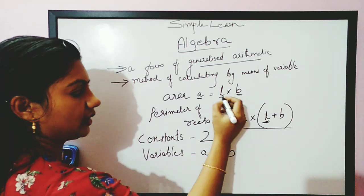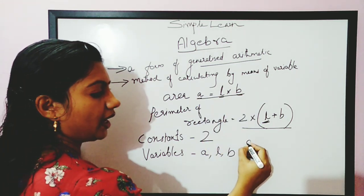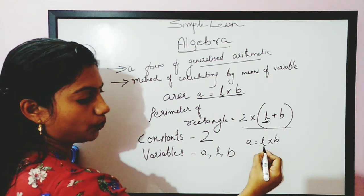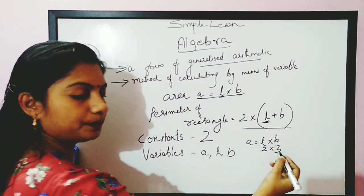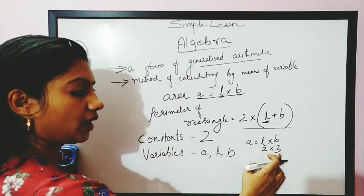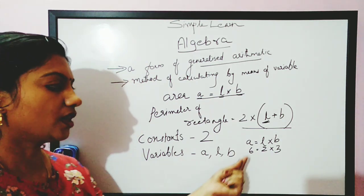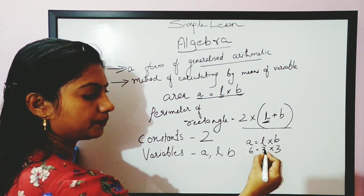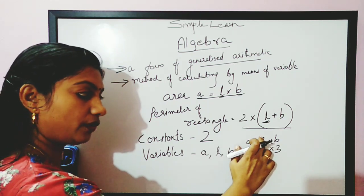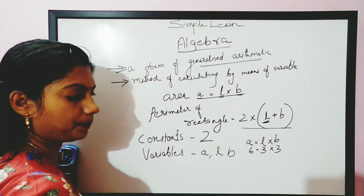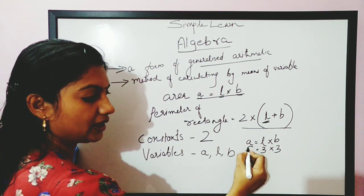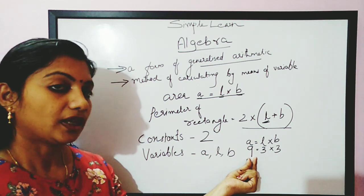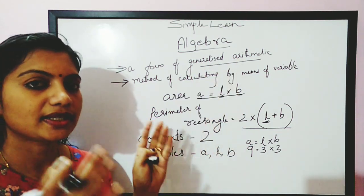So how do these change? Area equals length into breadth. If I have L equal to 2 and B equal to 3, what is A? A equals 3 into 2, which is equal to 6. So A is dependent on L and B. Now let's take L equal to 3 — I just changed the value of L from 2 to 3. The answer should be 9. So depending upon the variable values, the final value is going to change. We call this generalized arithmetic.